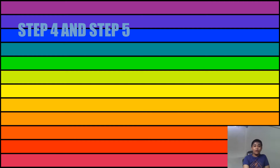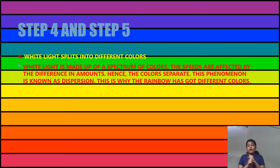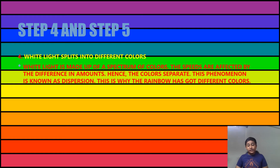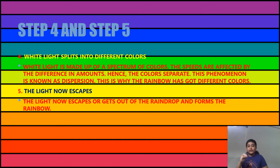Steps four and five: in the fourth step, the white light splits into different colors. White light is made up of a spectrum of colors, which we call the band of colors of the rainbow. The different colors are affected by the difference in density between air and water droplets, so the colors separate — this phenomenon is known as dispersion. The separation of white light into seven colors is called dispersion. After dispersion, the light escapes out of the raindrop and forms the rainbow in the sky.